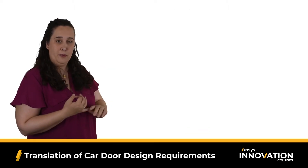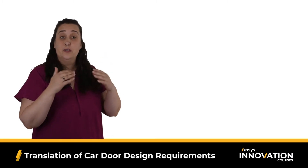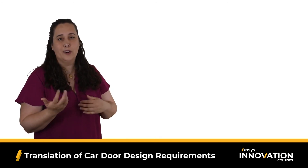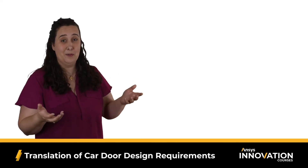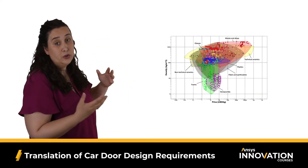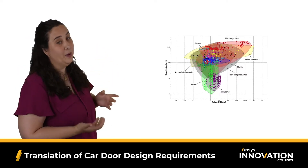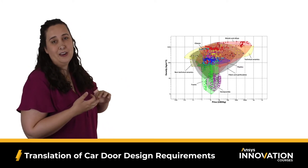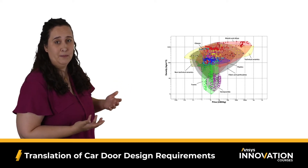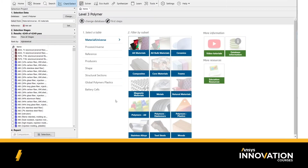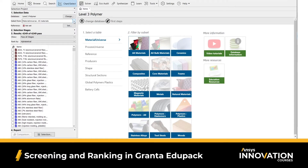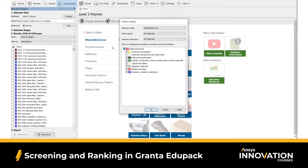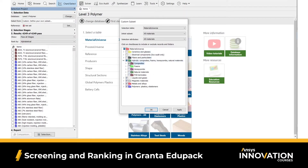Something we haven't talked about yet in this series is the materials that we start our screening process with. In all the rest of our examples, we've just looked at every material available to us. But what if you already know that some material families just aren't going to be applicable? Looking at a chart of density versus price — the two properties we're trying to optimize — we can tell that ceramics are just too brittle, and foams, particulates, and fibers are just not structurally sound enough for this application. In both ANSYS Granta EduPack and Granta Selector, we can choose what materials we start our screening with. For this example, let's create a custom subset considering only composites, lightweight and ferrous metallic alloys, and polymers. This already drops the number of possible materials from over 4,000 to less than half.